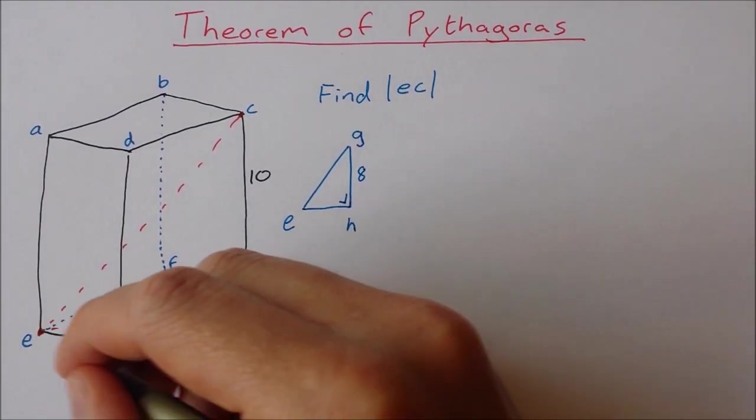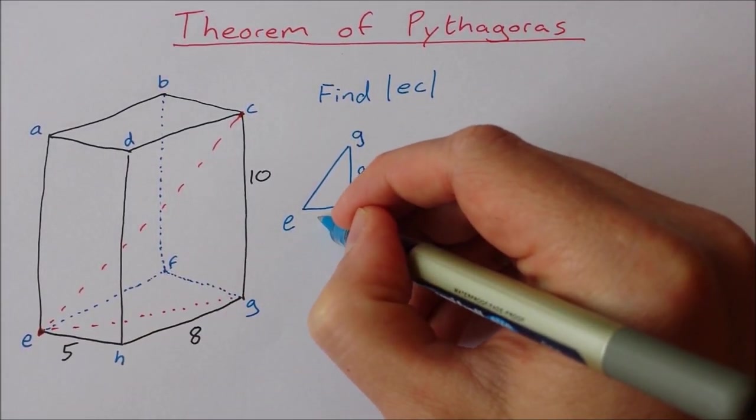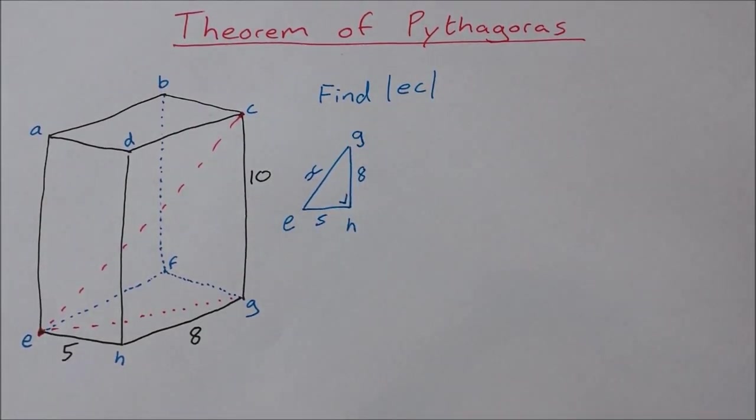HG is 8, HE is 5. And this is what I want to find X.